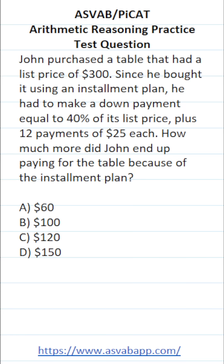This arithmetic reasoning practice test question for the ASVAB says: John purchased a table that had a list price of $300. Since he bought it using an installment plan, he had to make a down payment equal to 40% of its list price plus 12 payments of $25 each. How much more did John end up paying for the table because of the installment plan?